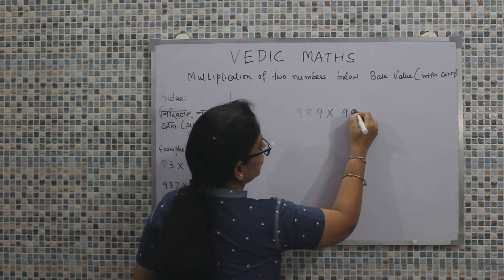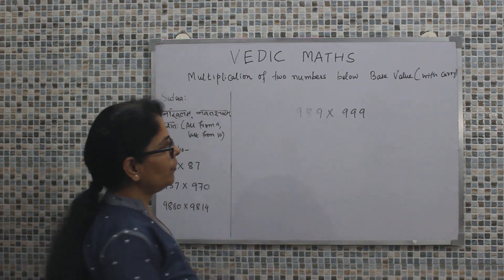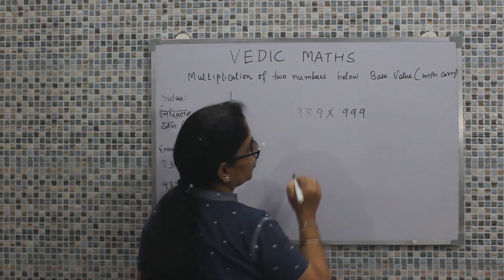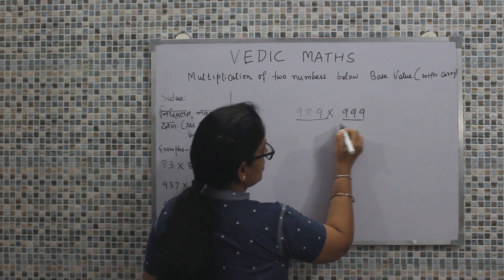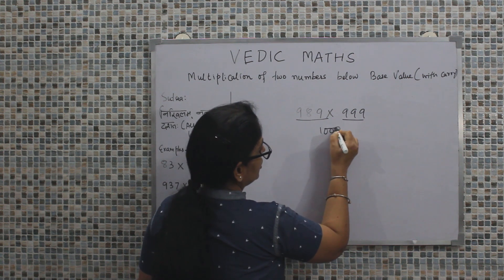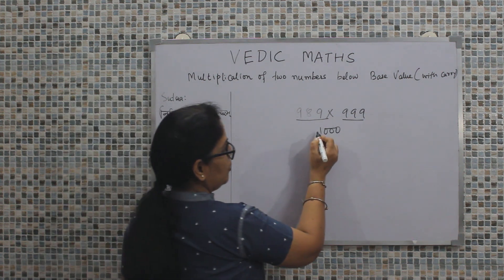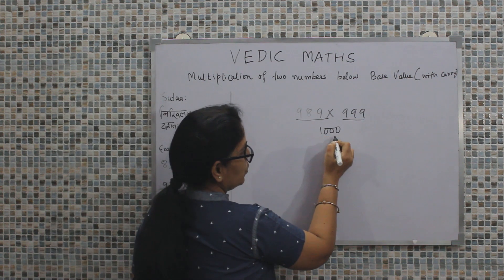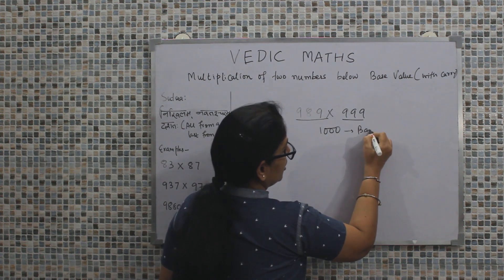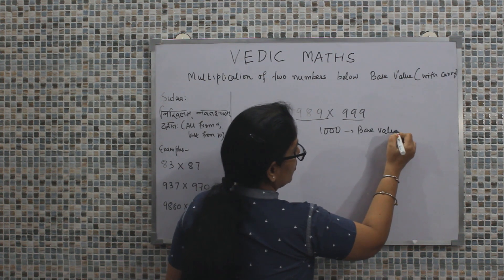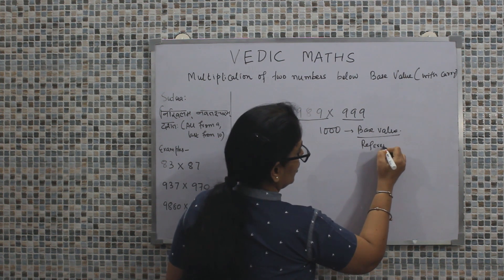989 into 999. If we look into the nature of both the numbers, we find that both numbers are close to 1000. Because both the numbers are close to 1000 or nearest to 1000, we would be taking the base value as 1000. This base value is also referred to as the reference value.